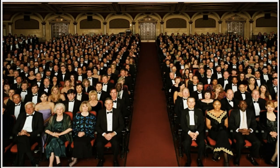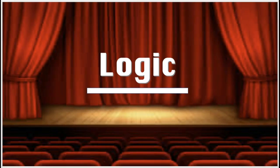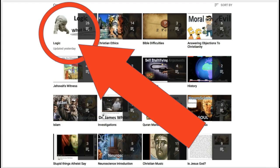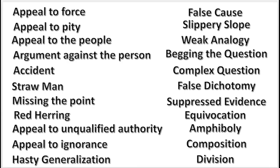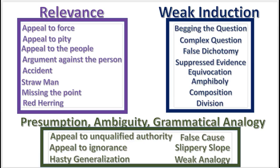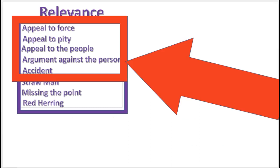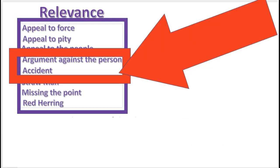Welcome, ladies and gentlemen, to Logic. Now, if you've been following this series, then you will know that we are at the point of mastering fallacies. Here's a list of some 22 informal fallacies, divided into three categories. We've covered these fallacies so far, and today's quiz will involve these fallacies.